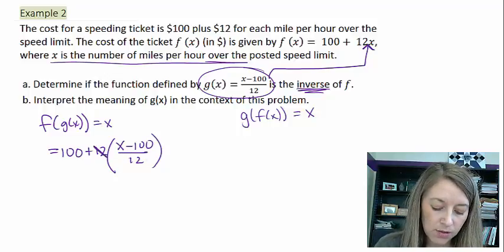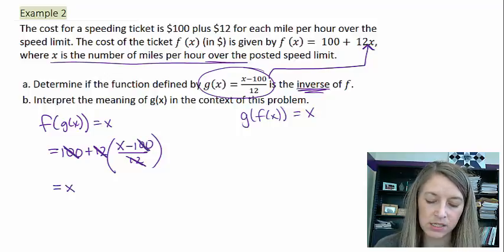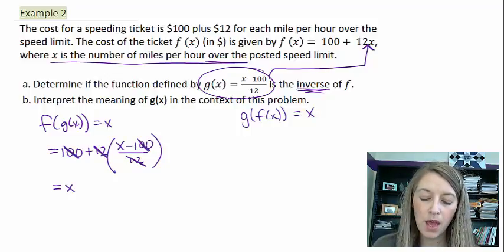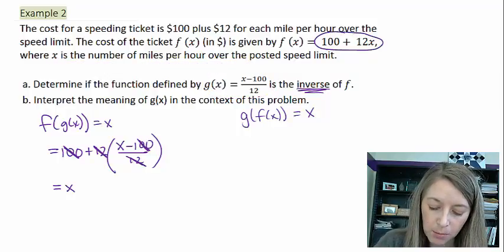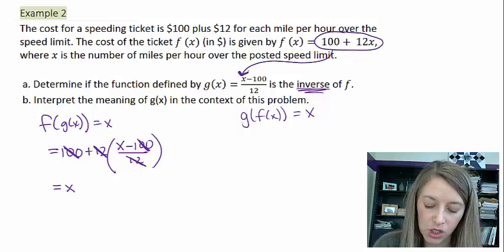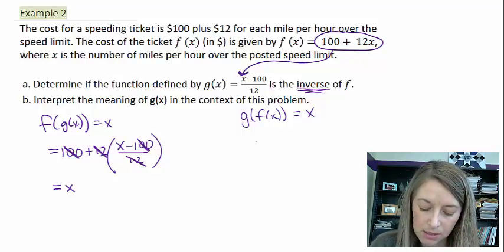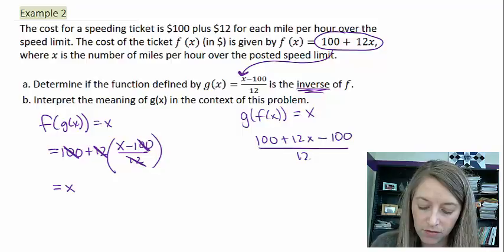Well, we see that the 12s are going to cancel out, the 100s are going to cancel out, and of course that simplifies to be x. Now, the opposite way. We need to take our f function and plug it in for all of the x's in my g function. So that means instead of x, I have 100 plus 12x minus 100 over 12.